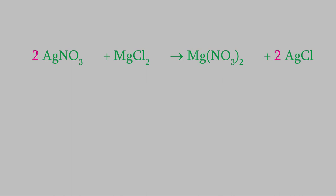So we know our products are magnesium nitrate and silver-1 chloride. But how do we know whether or not this is a precipitation reaction? Remember, in a precipitation reaction one of the products will be a solid, so we need to know whether or not the products are soluble in water. To help us, there are a set of rules that tell us what compounds are soluble.